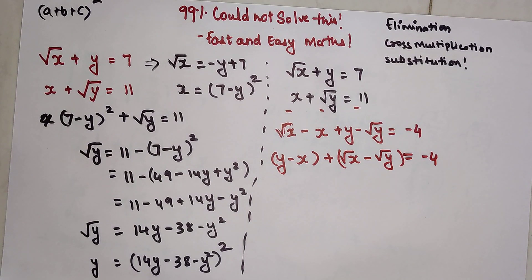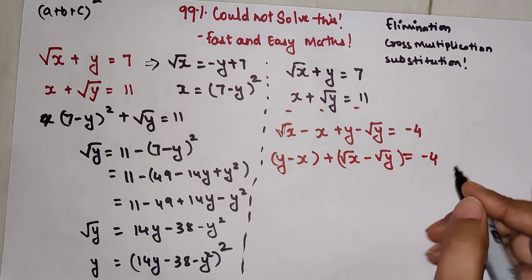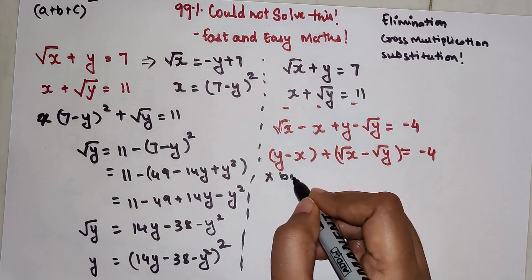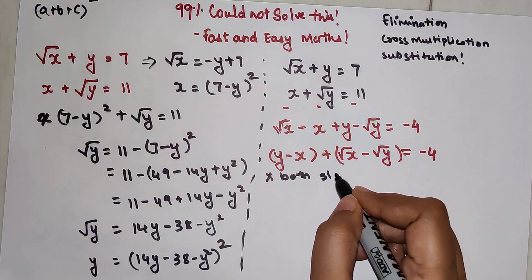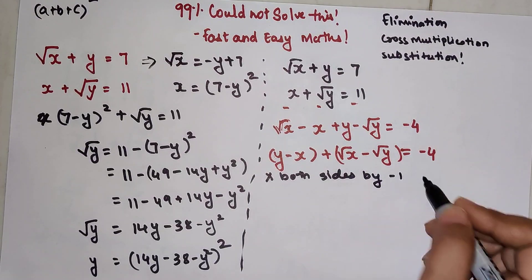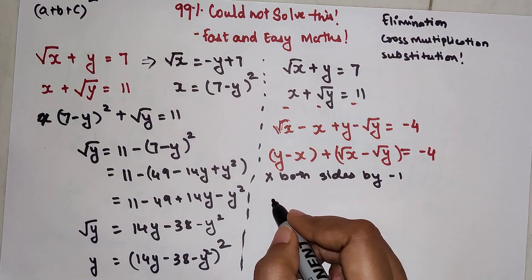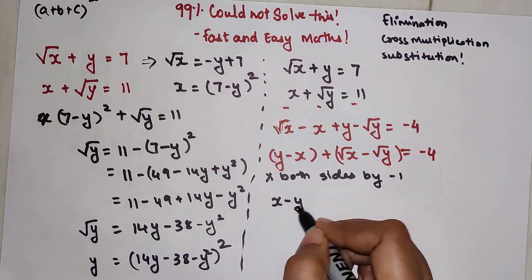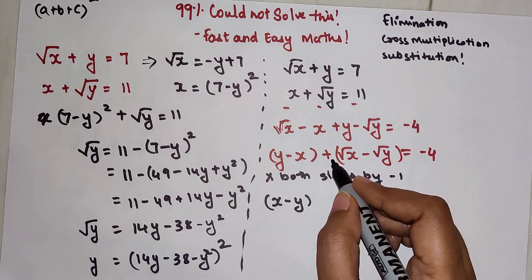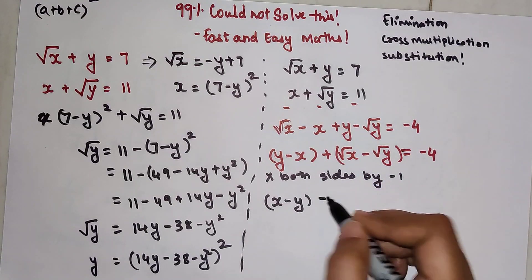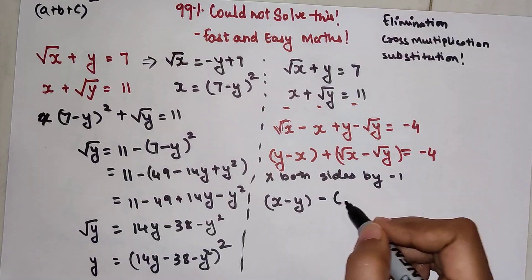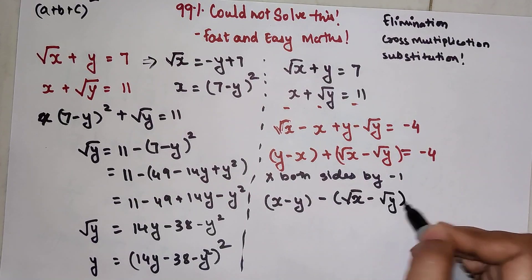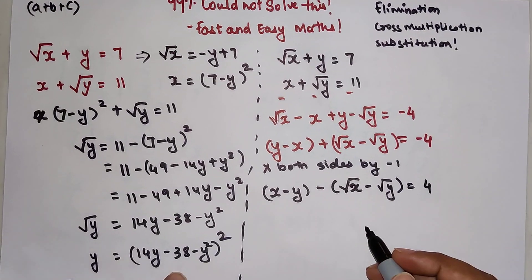I want to get rid of this minus. I will multiply both sides by negative 1. When I do that, this becomes x minus y, and here there's a plus sign. When you multiply with negative, just make this plus minus and keep the bracket as it is. This equals to 4.